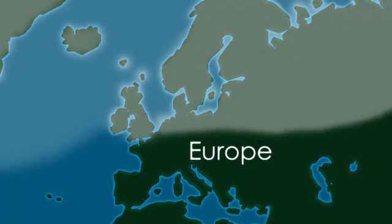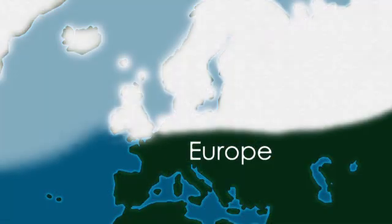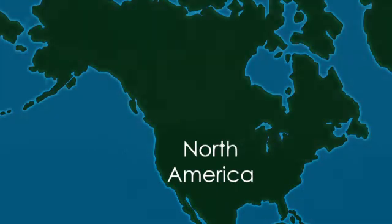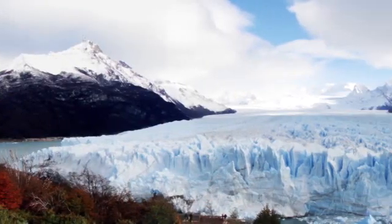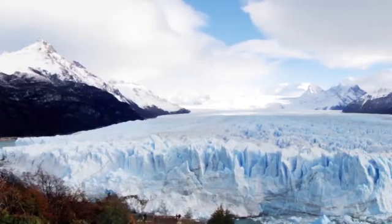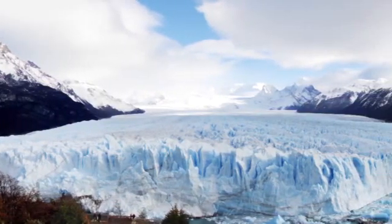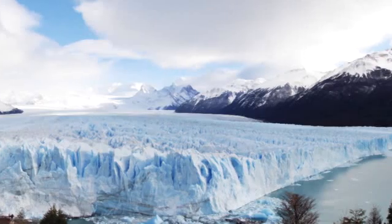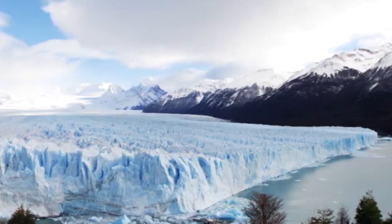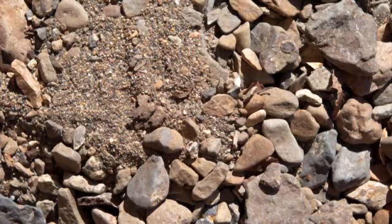Agassiz theorized glaciers were the remnants of a huge glacial ice field that once covered much of the continent. Geologic evidence of massive glacial activity also occurs in North America. Agassiz had discovered evidence of the most recent major ice age, a period of time when glacial ice fields extended across large sections of the planet.